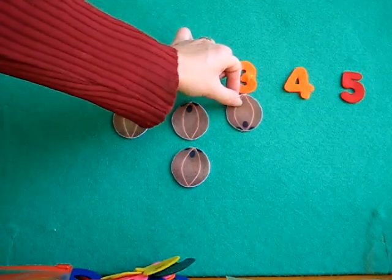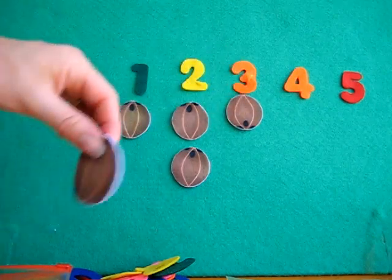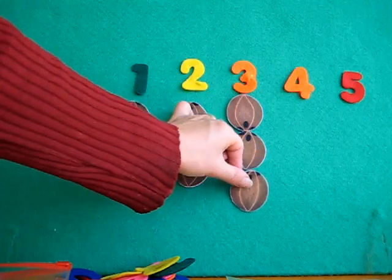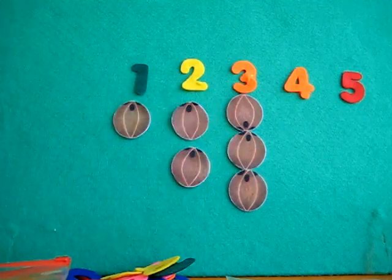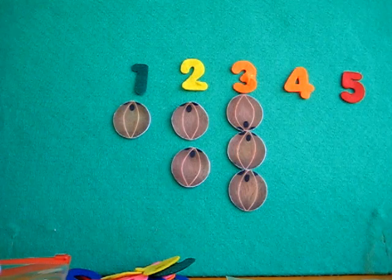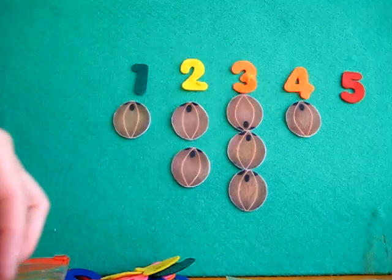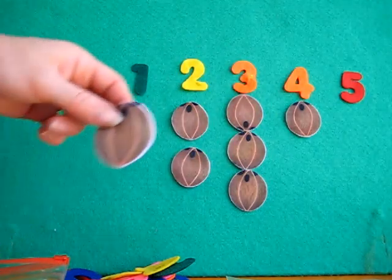And on we go to three. Let's put three coconuts. One. Count with mommy. Two. Three coconuts. Ooh, who likes coconuts? Yummy, juicy coconuts. Drink the milk of the coconut and then you can eat the meat of the coconut.